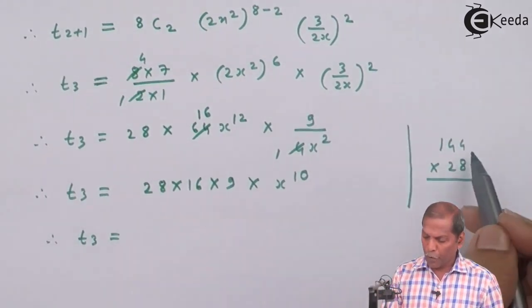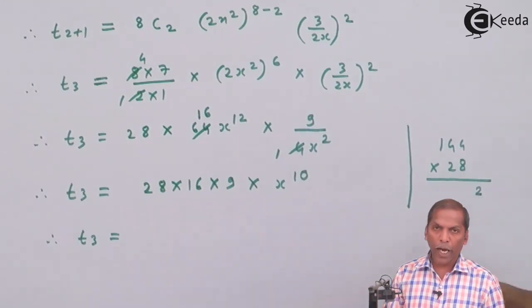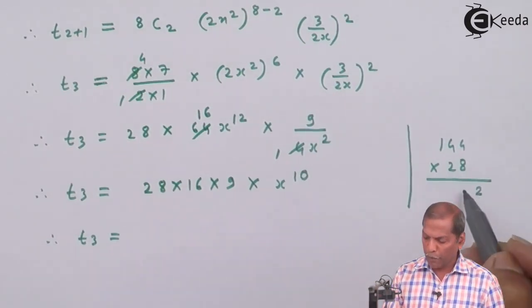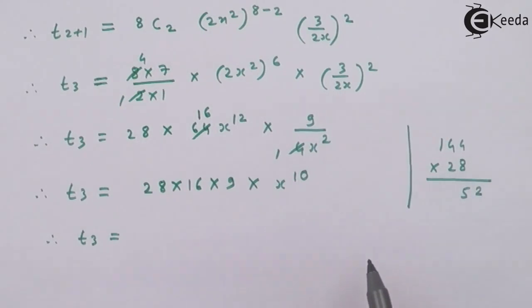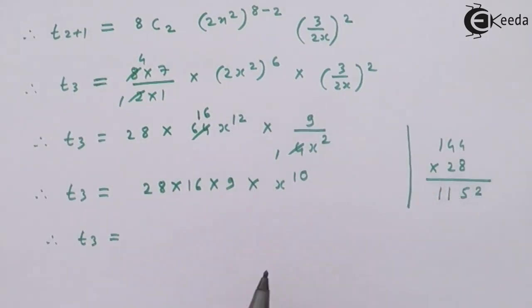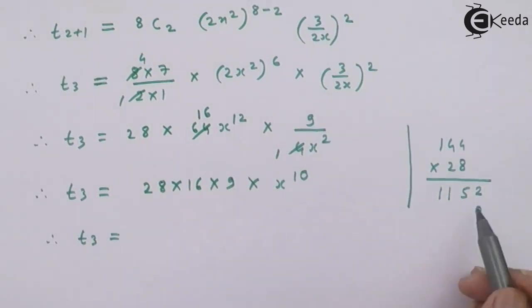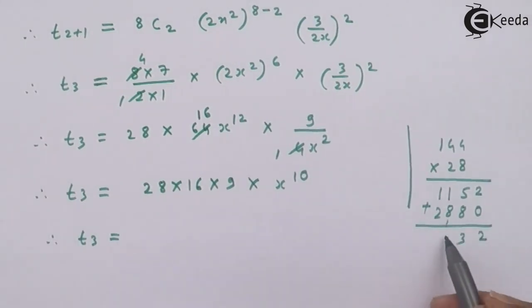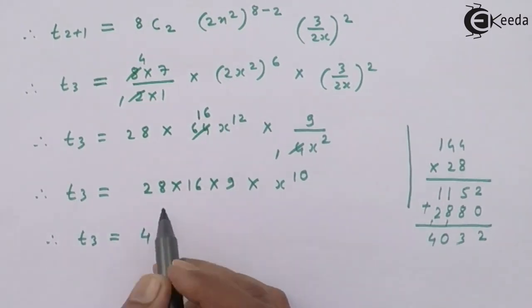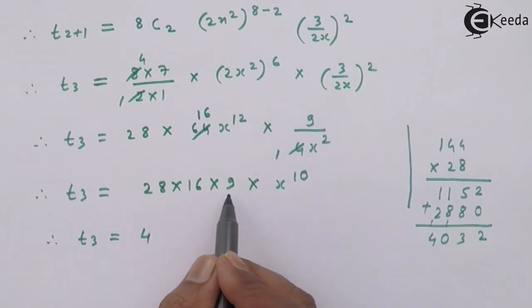8×4 = 32, carry 3. 8×4 = 32+3 = 35, carry 3. 8×1 = 8+3 = 11. Then 2×4 = 8, 2×4 = 8, 2×1 = 2. On adding we get 4032.